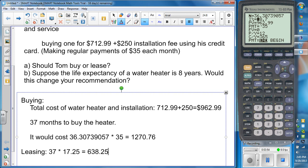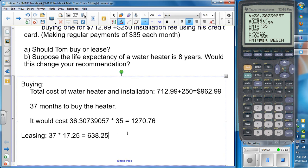Part B says, suppose the life expectancy of a water heater is eight years. Okay, so first of all, let's figure out the cost of eight years of leasing.